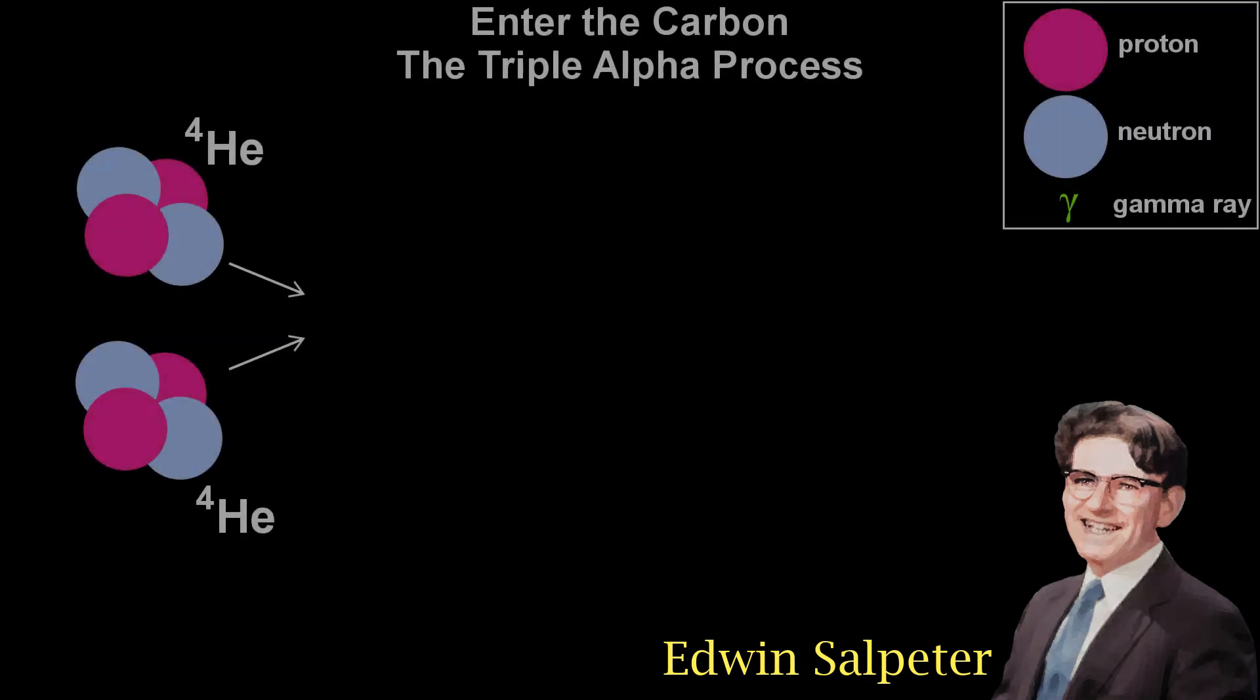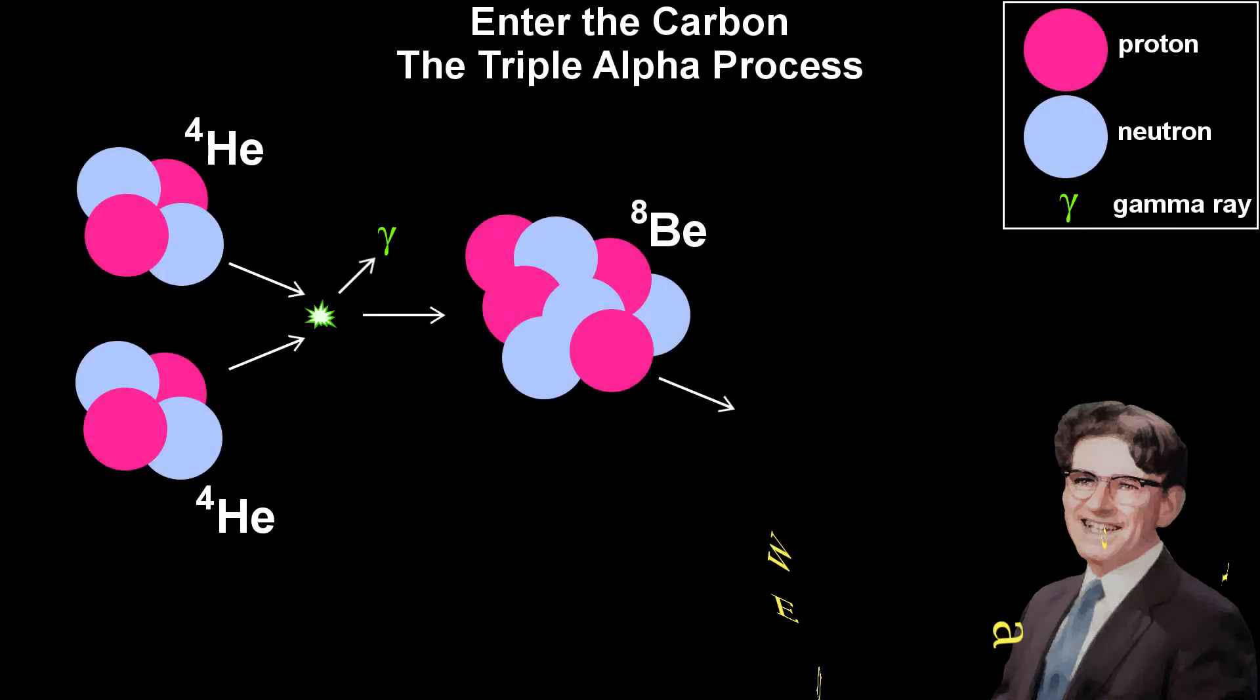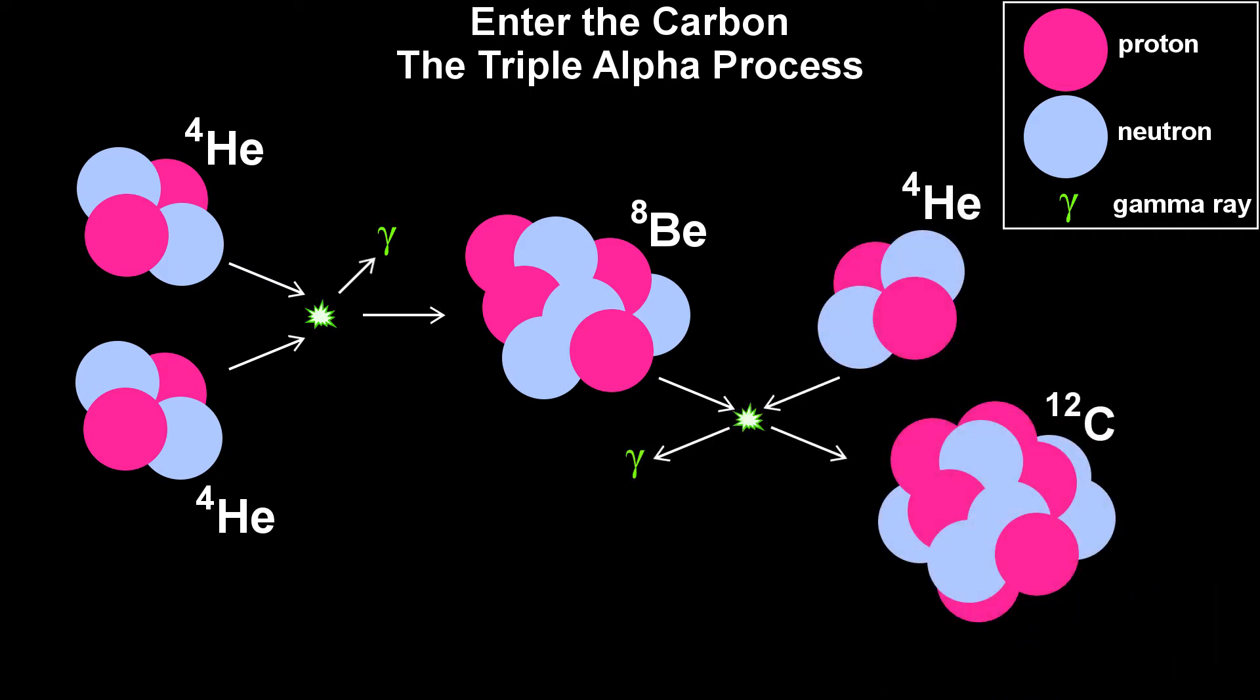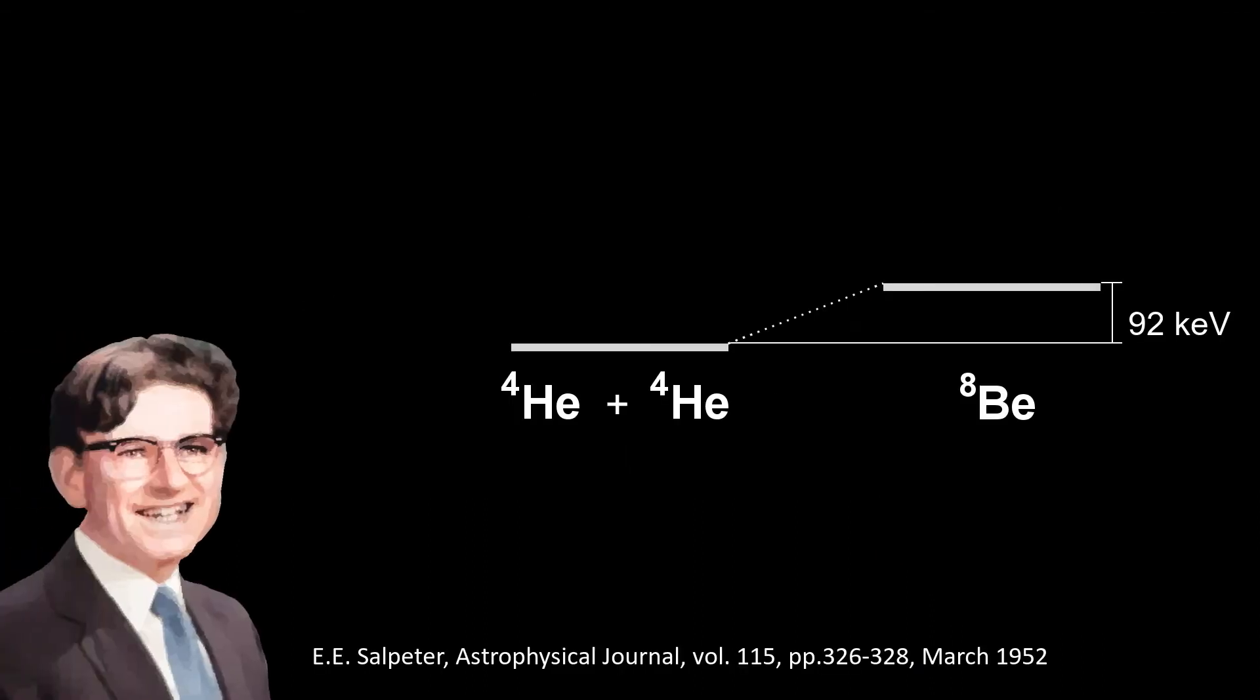Ed Salpeter thought about changing the picture. Rather than three alpha particles colliding, he pictured two colliding to make beryllium-8. Beryllium-8 then collides with a further helium nucleus to make carbon. In 1952, he observed that the mass energy level of ground state beryllium-8 was only slightly higher than the energy of a pair of alpha particles. He reasoned that this would lead to an important resonance.